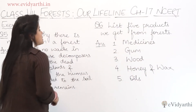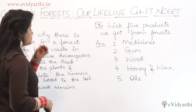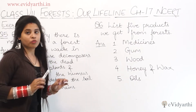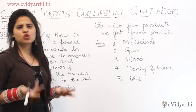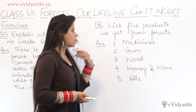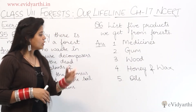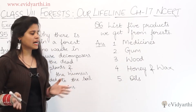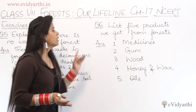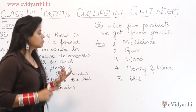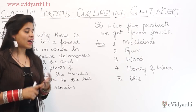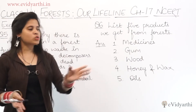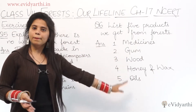Question number 6: list 5 products we get from forests. There are a lot of products from forests and I have written a lot of products here, but you can add more. The first is medicine, then gum, wood, honey, wax, oil, and spices. So, there are a lot of things and we can make this list very long.